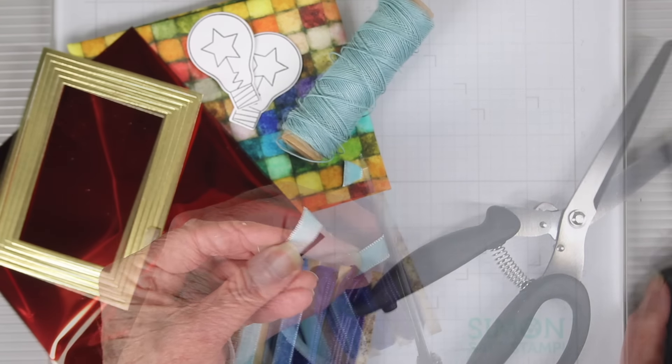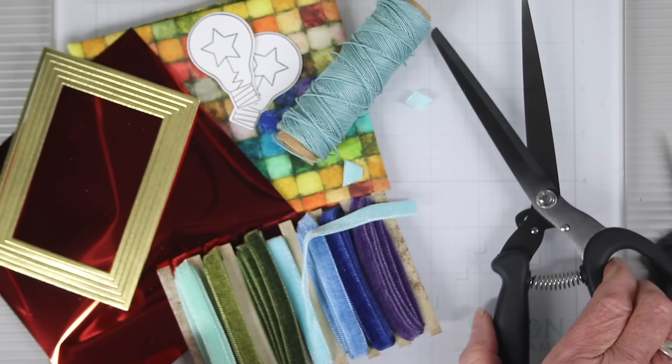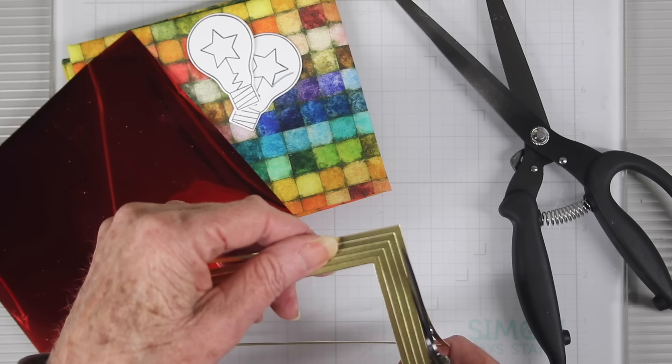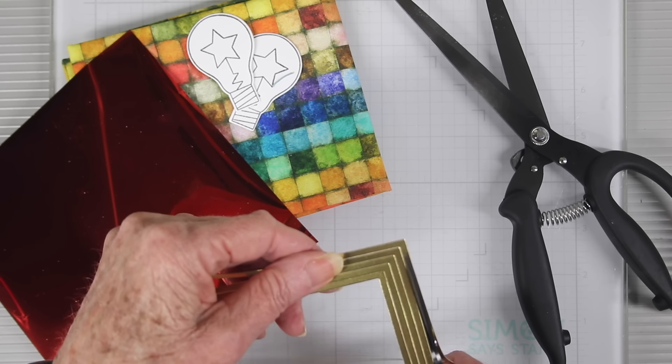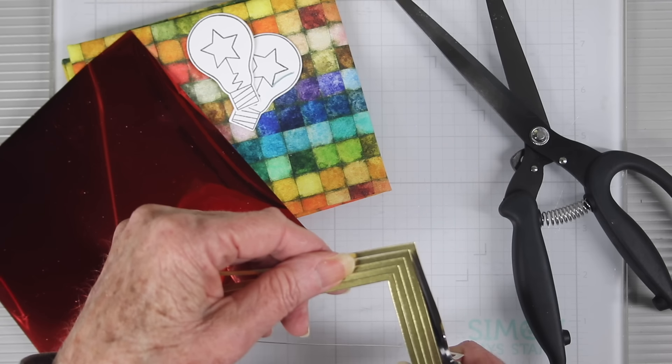You can cut through your thicker ribbons with either the snips or the larger scissors. And the thinness of the blades of the mini snips makes it really easy to get into tight areas.